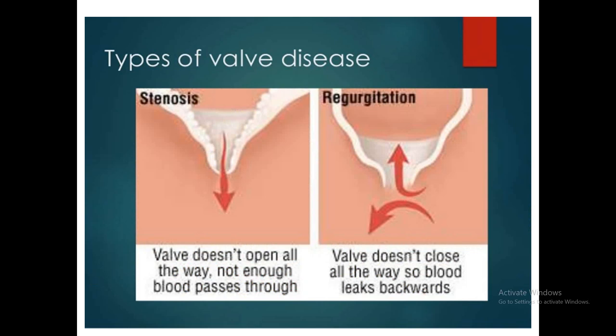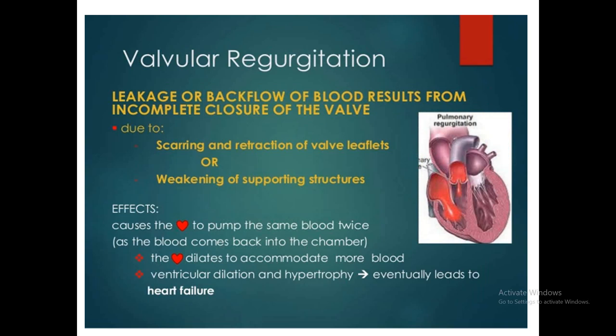There are two types of valve disease. If the valve opening is small and blood cannot pass through, it is called stenosis. If the valve cannot close properly — it remains wide open — this is called regurgitation or insufficiency of the valve. These two types apply to every valve, whether mitral, aortic, tricuspid, or pulmonary — valvular regurgitation or valvular stenosis.